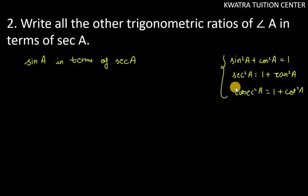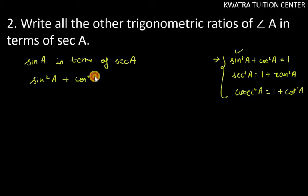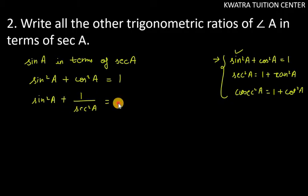To convert sin A in terms of sec A, the most suitable identity is the first one, because it has sin A and cos A — and cos A is the reciprocal of sec A. So we start with: sin²A + cos²A = 1.